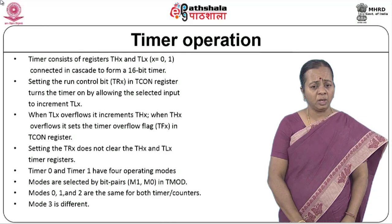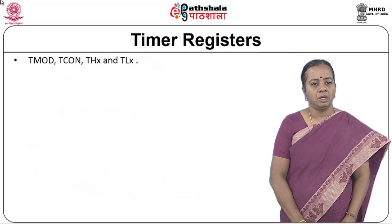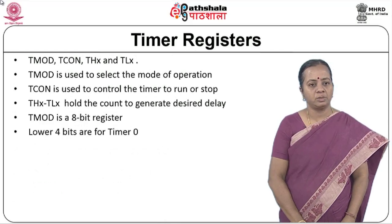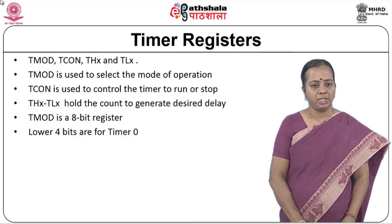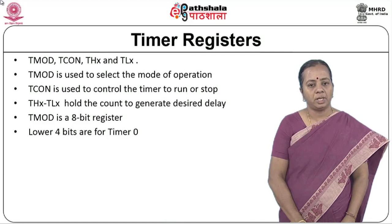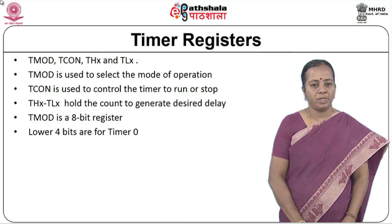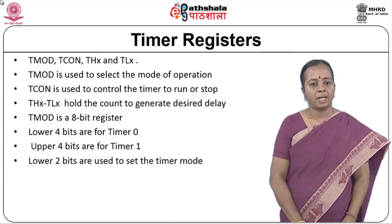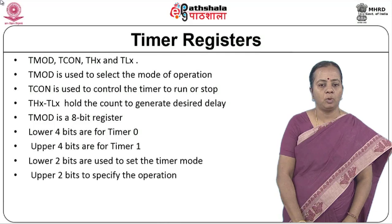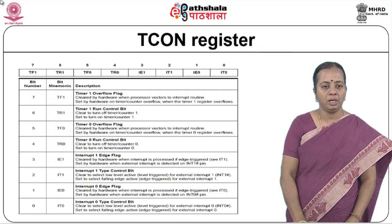Both timer and counter modes need the mode to be set. The control registers are TMOD and TCON. TH and TL are the timer data registers. TMOD is used to select the mode of operation; TCON is used to control the timer — to run, stop, or start it. TL and TH hold the data to determine how much delay has been generated, and we can also load a particular value into these registers to specify how much delay to generate. TMOD is an 8-bit register where the lower 4 bits are for timer 0 and the upper 4 bits are for timer 1. The lower 2 bits set the timer mode, and the upper 2 bits specify the operation.